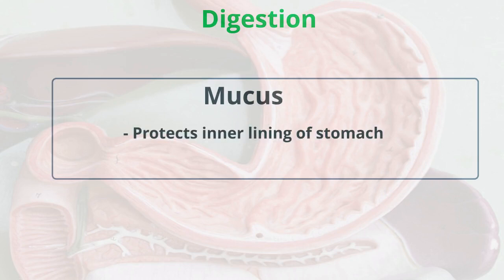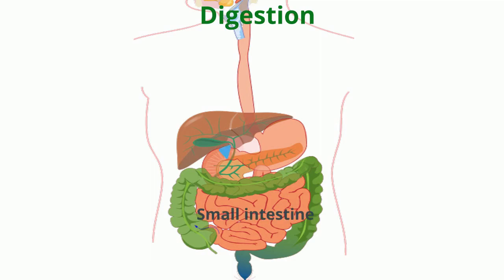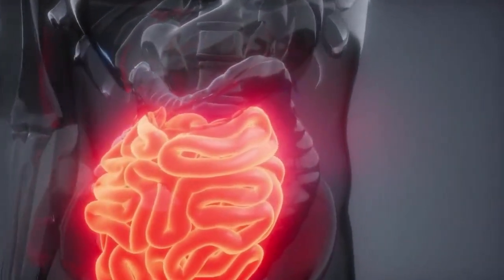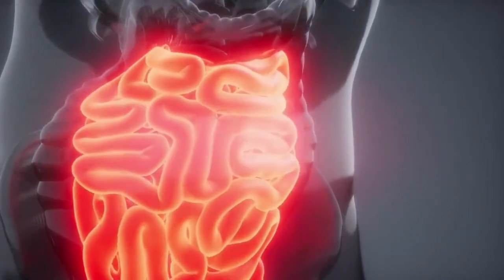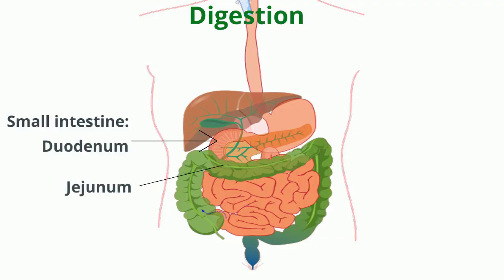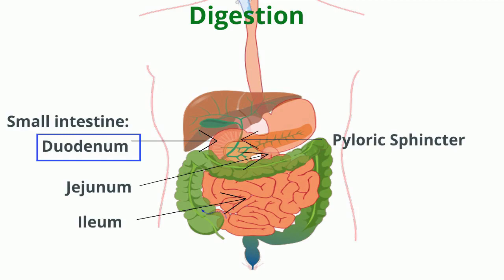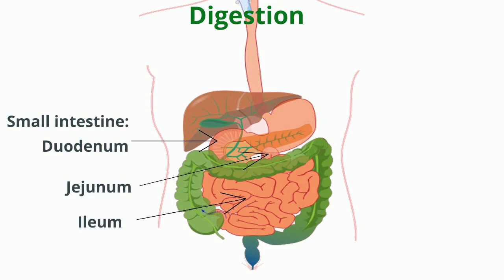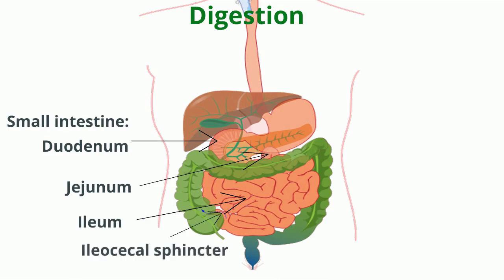The partially digested food then enters the small intestine, which is regulated by the sphincter muscle. The small intestine is the longest part of the alimentary canal, about 6.5 meters long in adults. The major events of digestion and absorption occur in the small intestine. It is divided into three regions: the duodenum, jejunum, and ileum. The duodenum is the shortest region, starting at the pyloric sphincter of the stomach and extending about 10 inches until it merges with the jejunum. The jejunum is about 1 meter long and extends to the ileum. The ileum is the longest region of the small intestine, measuring about 2 meters, and joins the large intestine at the ileocecal sphincter.